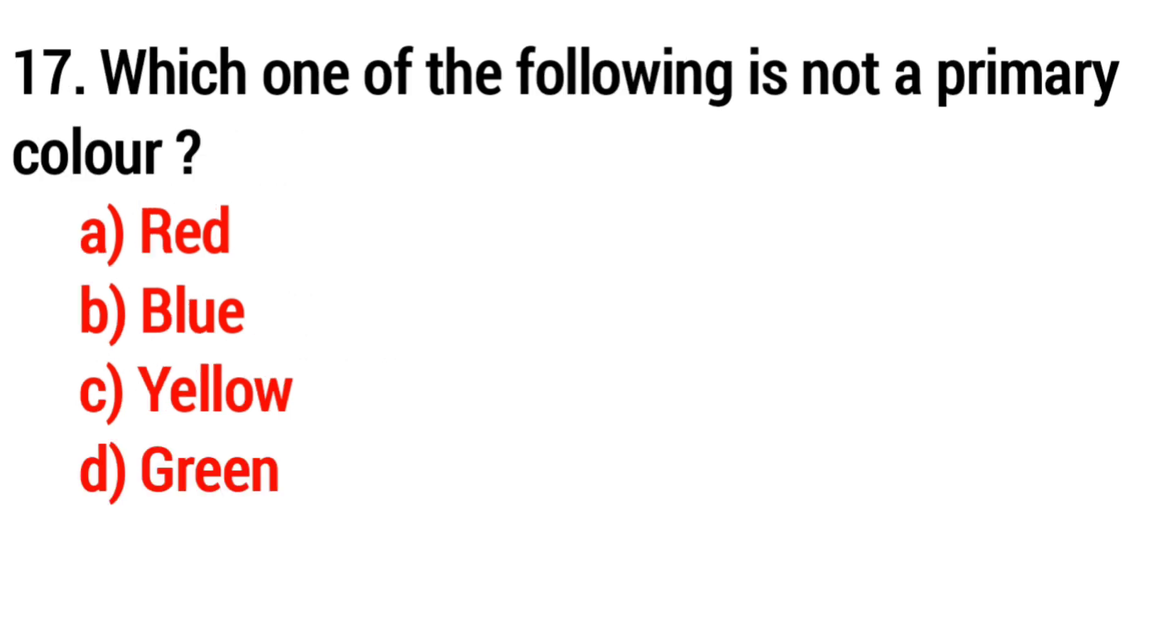Question number 17: Which one of the following is not a primary color? The correct answer is option D, green.